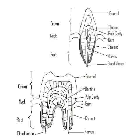The pulp cavity is the one that contains the nerves and the blood vessels. The cement is the one that anchors the tooth into the jawbone. The enamel is very hard since it contains calcium and phosphate.